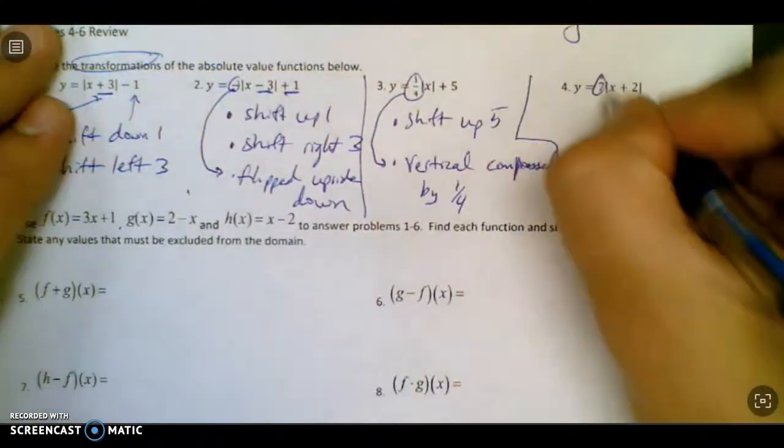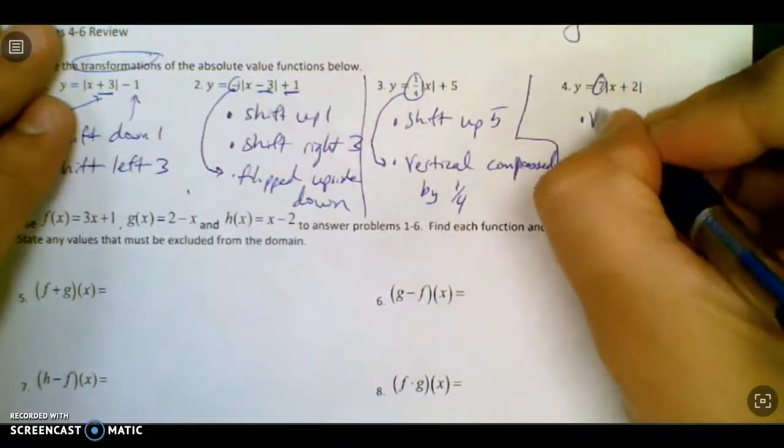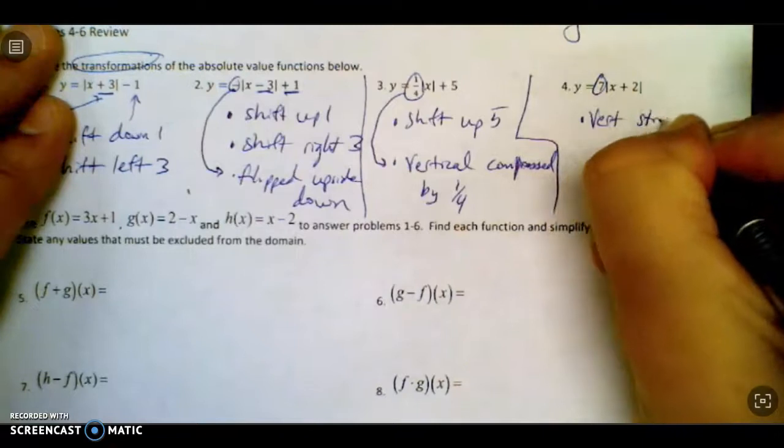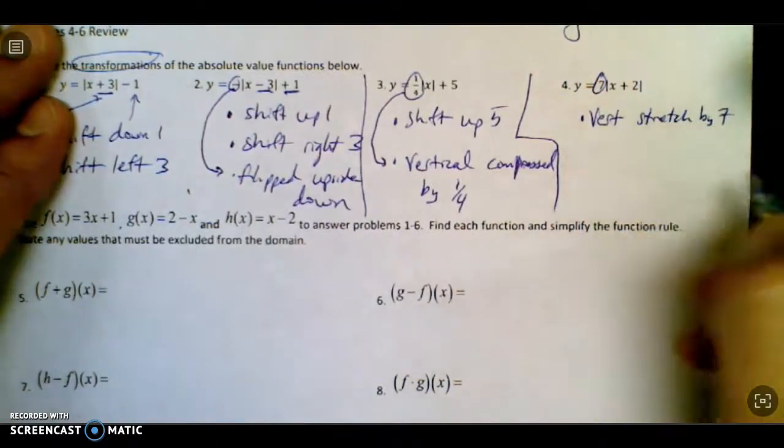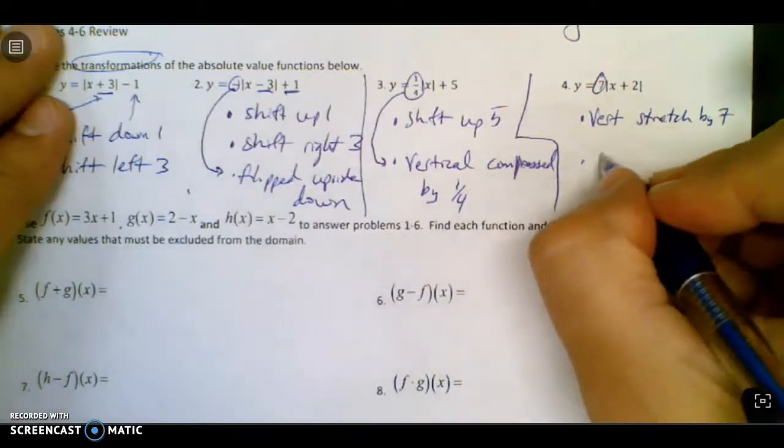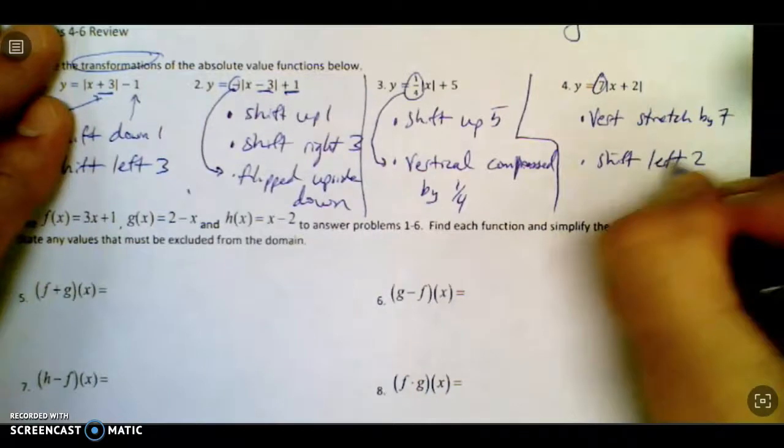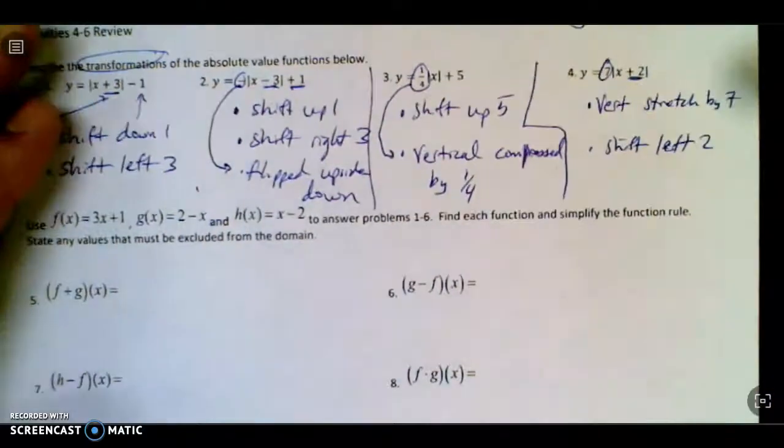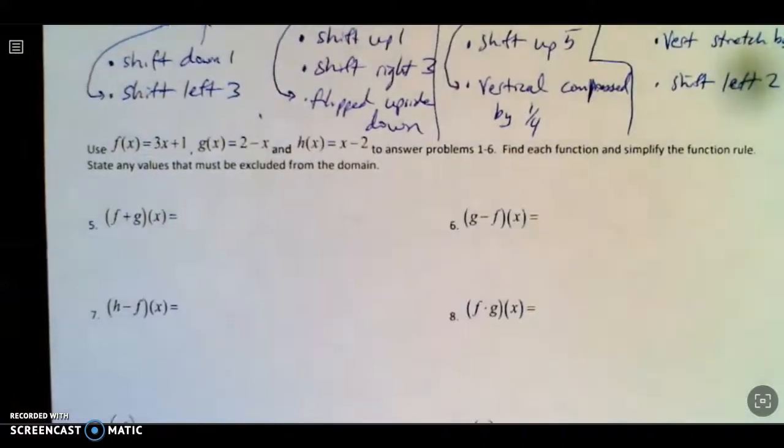And last but not least, that 7 will be a vertical stretch by 7, which means every y value is 7 times higher than it was. And this is left 2, because it looks like right 2, but it's actually left. So those are our shifts and stuff. Feels like a while ago we did that.